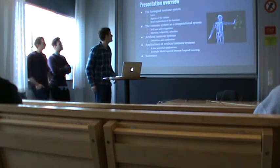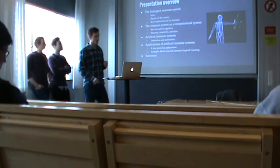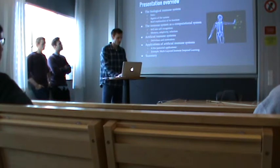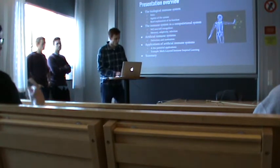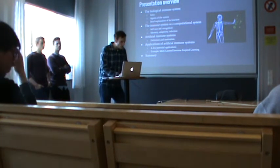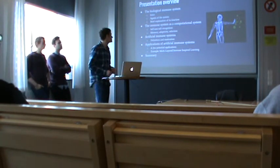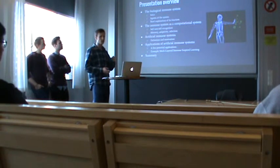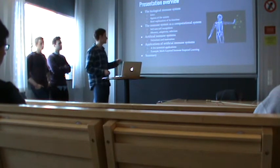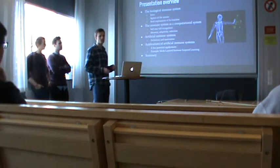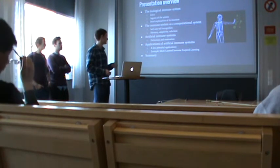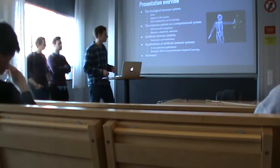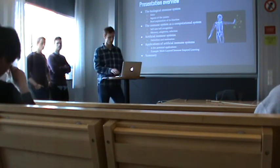First I'm going to give a brief overview of the presentation. I'm going to start talking about the biological system that is in our bodies, the agents of the system. Then we're going to continue with trying to extract the important features of the immune system that can work in a computational system. Then define what an artificial immune system actually is, with a concrete example of what it can be used for.